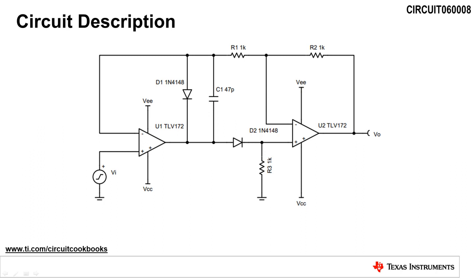This dual supply full wave rectifier can turn alternating current, or AC, signals to single polarity signals. The op amps U1 and U2 buffer the input signal and compensate for the voltage drops across D1 and D2, allowing for small signal inputs.